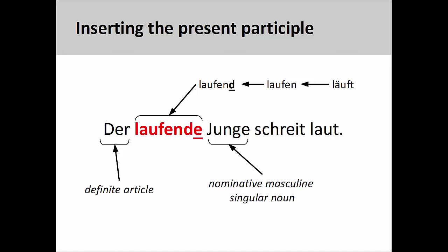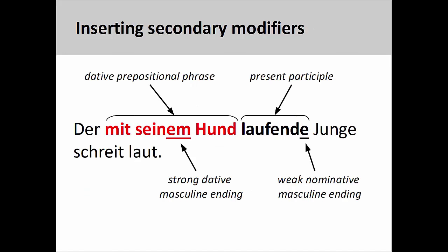You will recall from your study of adjective endings that all adjectives following a definite article will be weak. Since 'der' is a definite article signaling a masculine noun in the nominative case, we need to add 'e' as a weak adjective ending. You may want to review adjective endings if you are having difficulties with this step. Now that we have inserted the present participle and applied the correct adjective endings, let's go ahead and bring over the remaining secondary modifiers.